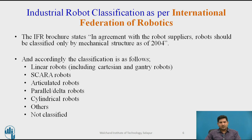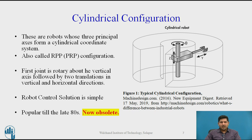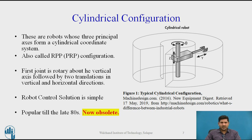Today we will be discussing cylindrical configuration and spherical configuration. The reason the cylindrical robot is called so is that its work envelope is a cylinder. These are robots whose three principal axes form a cylindrical coordinate system — the Z axis is perpendicular, and you have theta and Y.